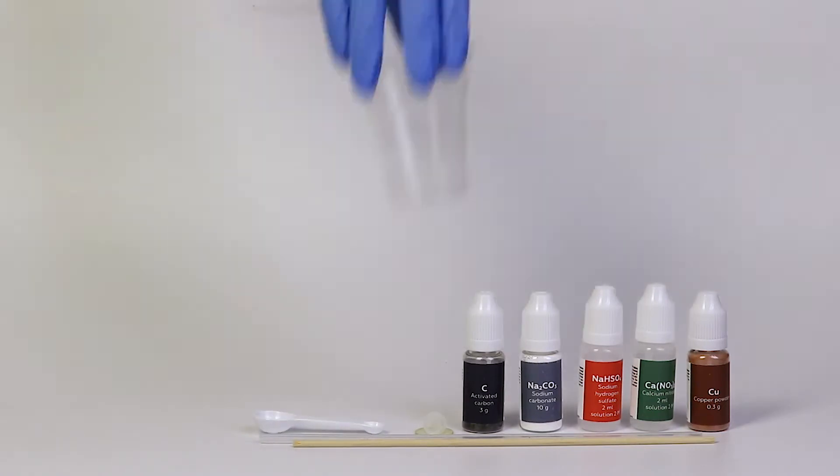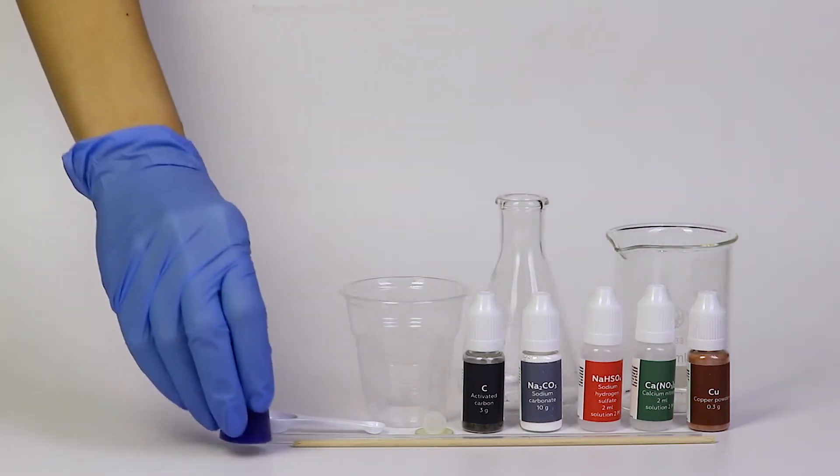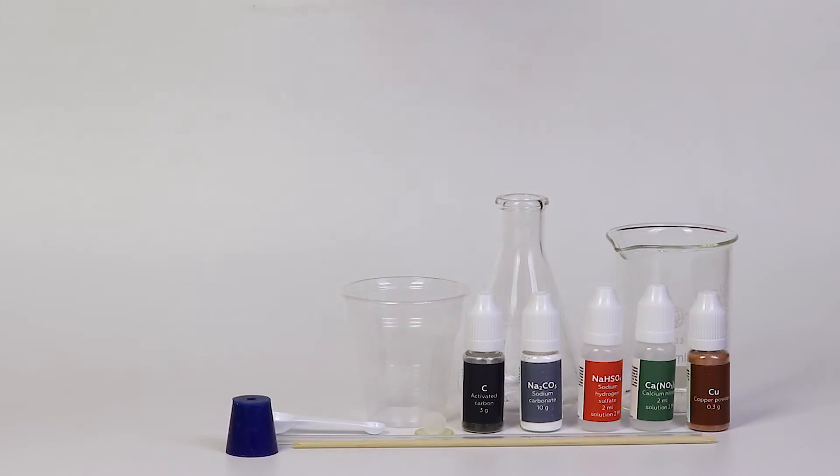From the starter kit, take a disposable cup, a beaker, a flask, a rubber stopper with one hole and another one without holes. Also, prepare boiling water.